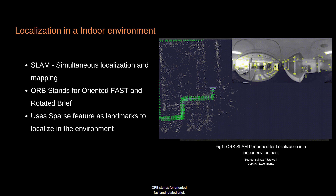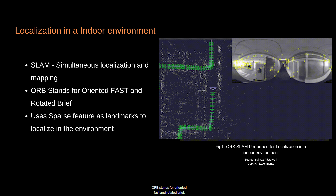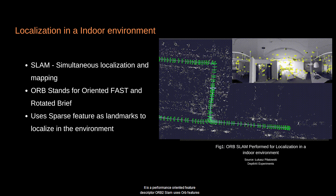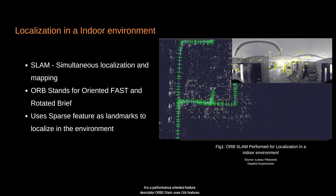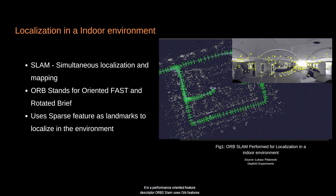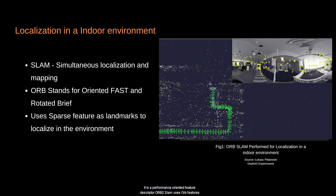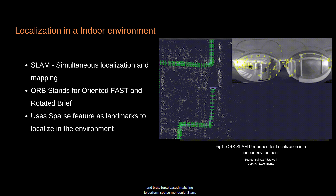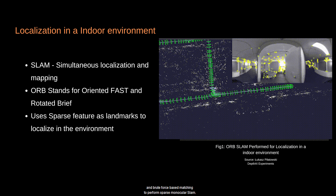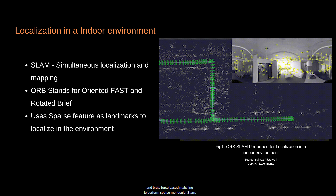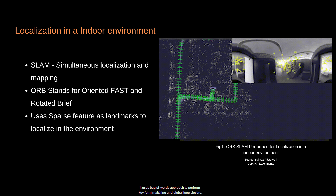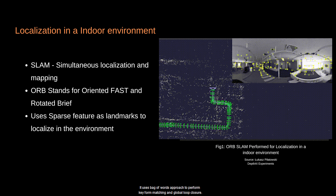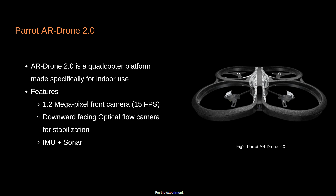ORB stands for Oriented FAST and Rotated BRIEF — it is a performance-oriented feature descriptor. ORB2 SLAM uses ORB features and brute force-based matching to perform sparse monocular SLAM. It uses a bag-of-words approach to perform keyframe matching and global loop closure.